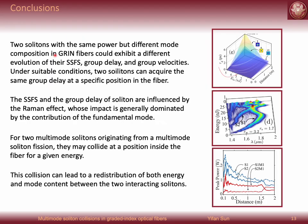So in conclusion, in this talk we show that two solitons with the same power but different mode composition in GRIN fibers could exhibit different evolution of the redshift, group delay, and group velocities. Under suitable conditions, two solitons can acquire the same group delay at a specific position in the fiber. And the redshift and the group delay of the soliton are influenced by the Raman effects, whose impact is generally dominated by the contribution of the fundamental mode. For two multimode solitons originating from one multimode soliton fission, they may collide at a specific position in the fiber for a given energy. This collision leads to a redistribution of both energy and mode content between the two interacting solitons. Thank you.